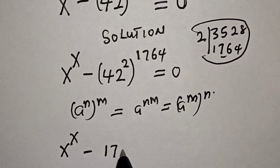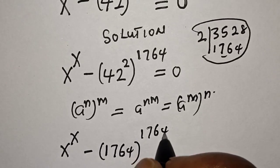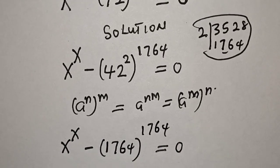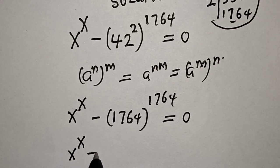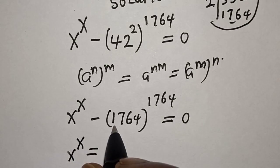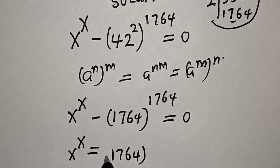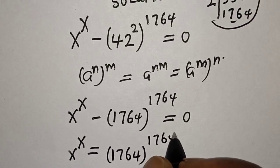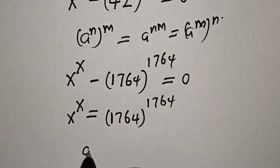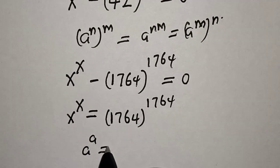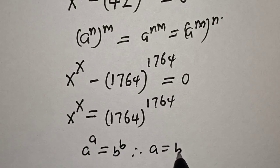That is 1764 raised to power 1764, equal to 0. So x raised to power x equals 1764 raised to power 1764. Now, if a raised to power a equals b raised to power b, therefore a equals b.